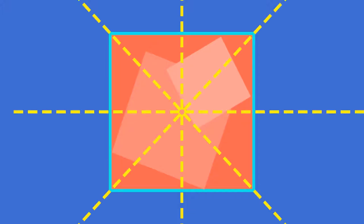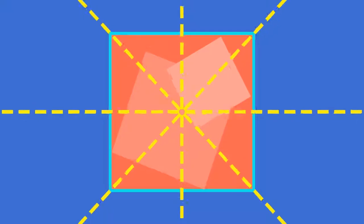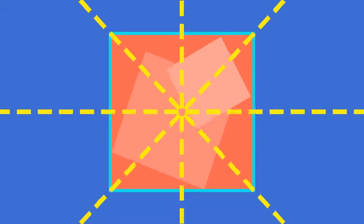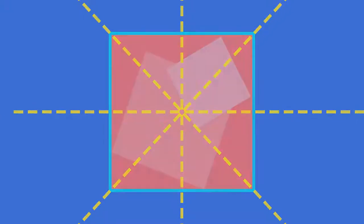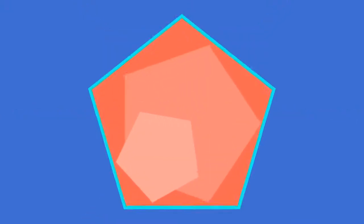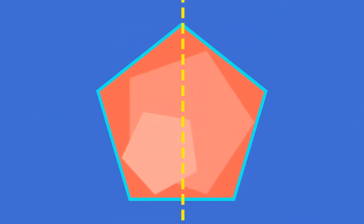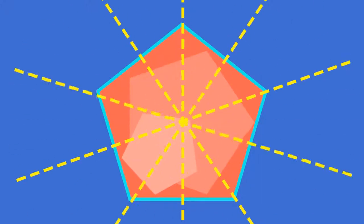Let's take a look at an example. A square is a regular polygon. It has four sides and four lines of symmetry. The number of lines of symmetry in a regular polygon is always equal to the number of sides. A regular pentagon has five sides and five lines of symmetry.